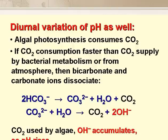As a result of algal photosynthesis, there is a diurnal variation of pH as well as of dissolved oxygen. This is because when the algae are photosynthesising rapidly, their CO₂ demand exceeds its supply from bacterial metabolism and from the atmosphere. So carbonate and bicarbonate ions in the pond water dissociate to provide more CO₂, but also hydroxyl ions (OH⁻), as shown by the equations on the slide. The CO₂ is used by the algae and the hydroxyl ions accumulate, so the pH rises.